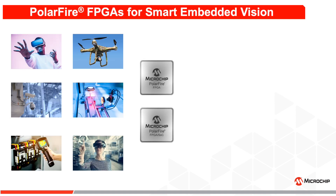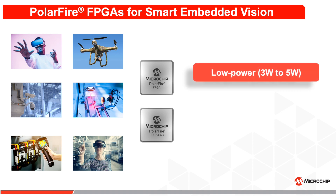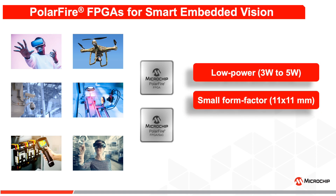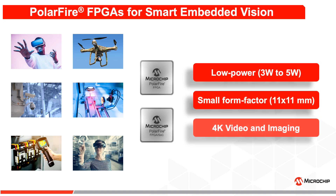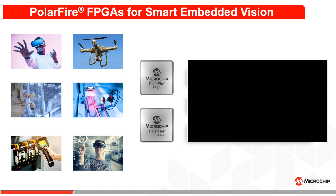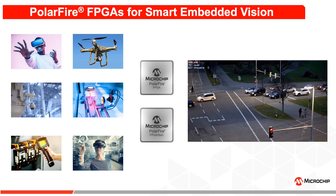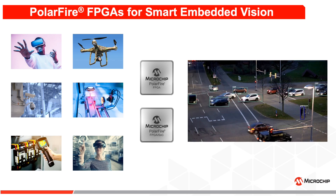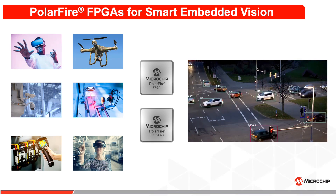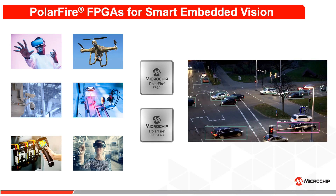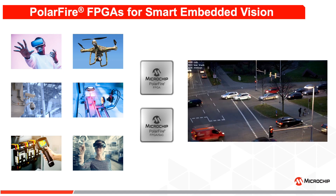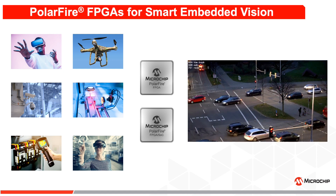PolarFire FPGAs are great for delivering low power, small form factor, 4K video and imaging applications. Now with the VectorBlocks Accelerator Software Development Kit and Neural Network IP, it is very easy to deploy CNNs without prior FPGA design expertise.